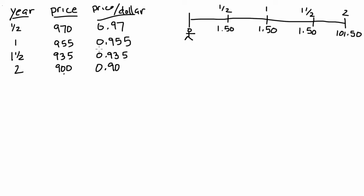This allows us to price the risk-free bond with coupons every six months. The price of this 3% coupon bond with semi-annual coupons is equal to the coupon received at each period times the price per dollar of future cash flow. In six months we receive $1.50, and we're willing to trade $0.97 today to receive a dollar in the future, so that $1.50 has a present value of $1.50 times $0.97. We do this for all the cash flows.